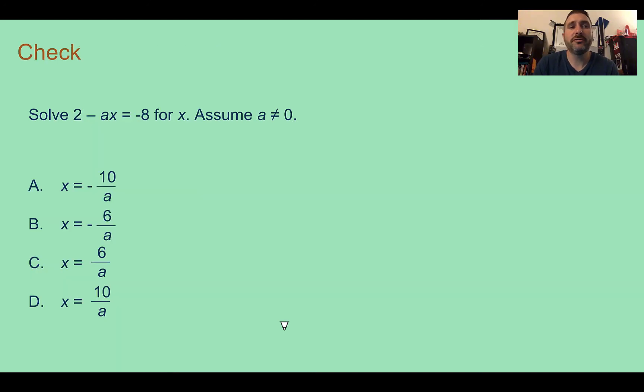Check your understanding. Solve 2 minus ax equals negative 8 for x. Again, assume a is not equal to 0. Pause the video and complete the check.